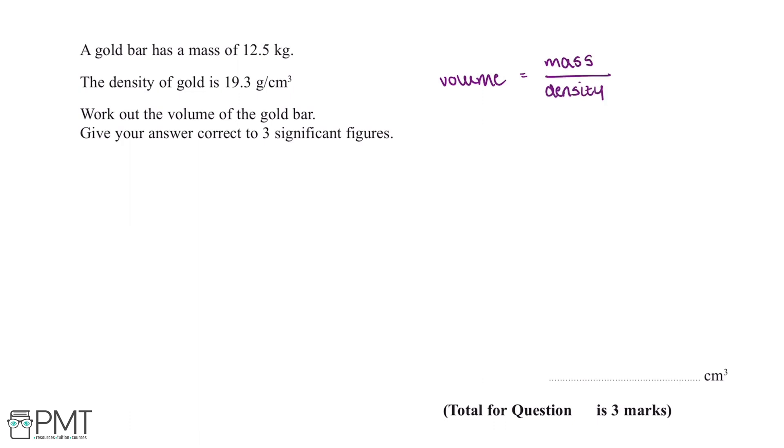The next thing we need to do for this question is convert the mass of the gold bar into grams, because our density has been given in grams per centimeter cubed. One kilogram equals 1,000 grams.